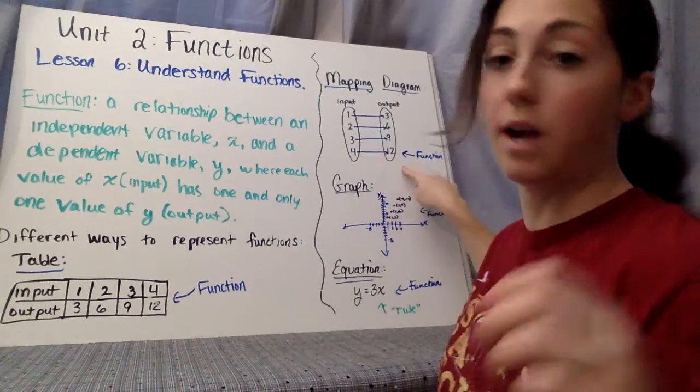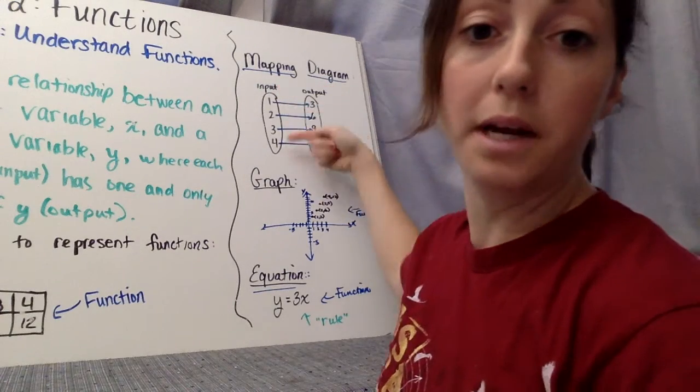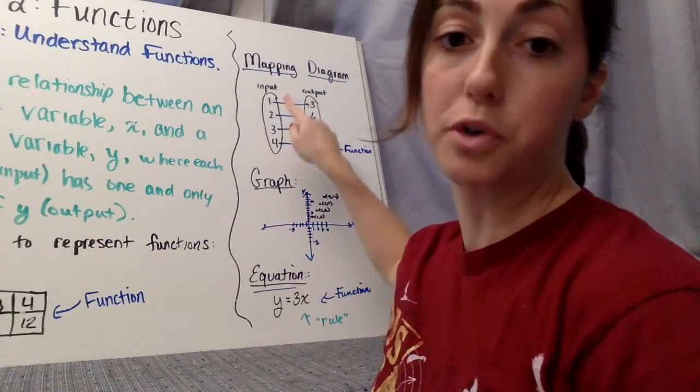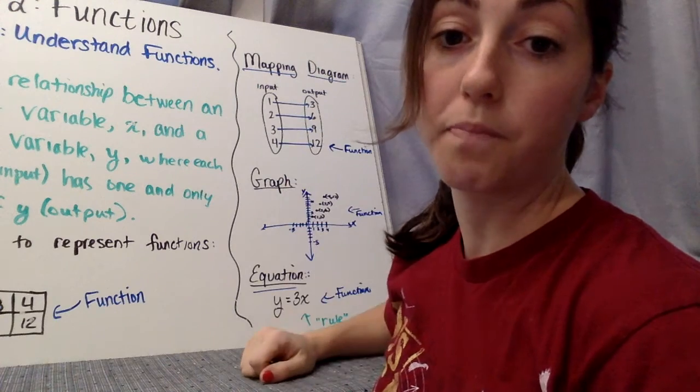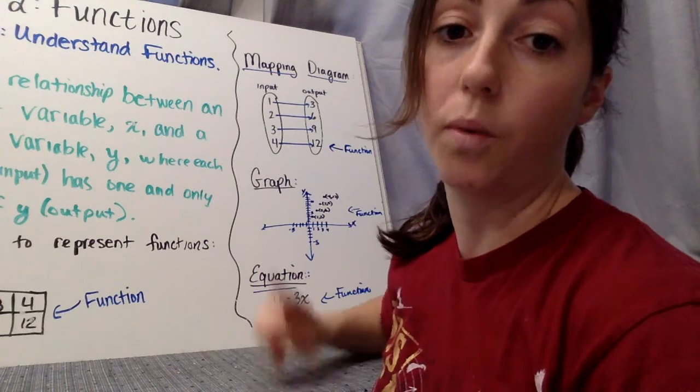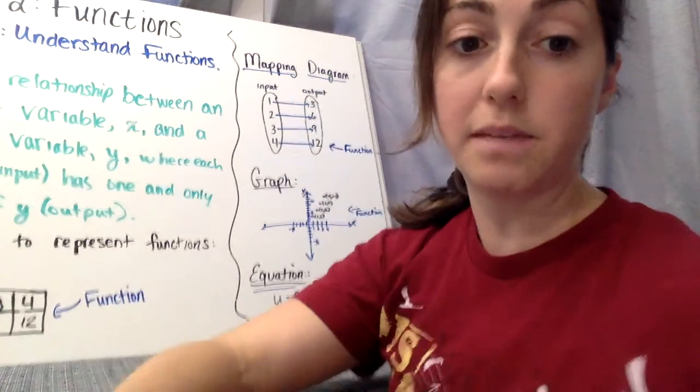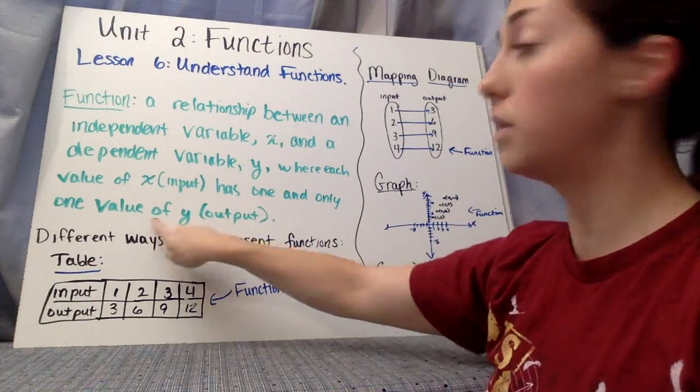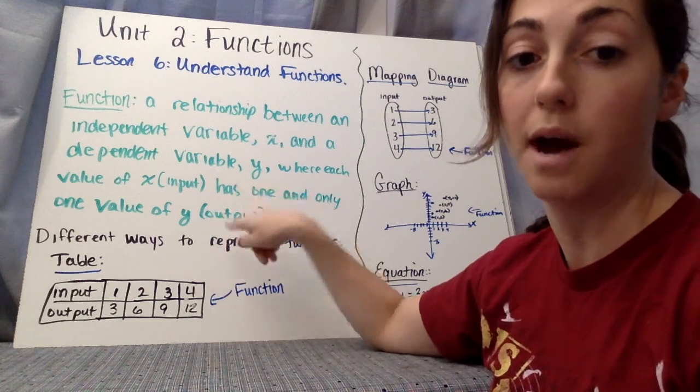If we look over here at our mapping diagram, we line up our inputs in a circle and our outputs in a circle, and we draw an arrow from the input value that corresponds to each output value. We know this is a function because we see only one arrow coming out of each input. So the phrase to focus on is, each value of x has one and only one value of y. Each input has one and only one output.